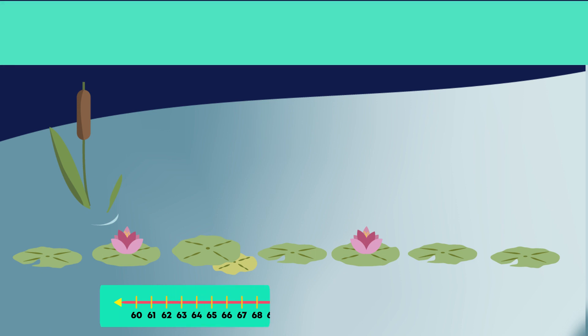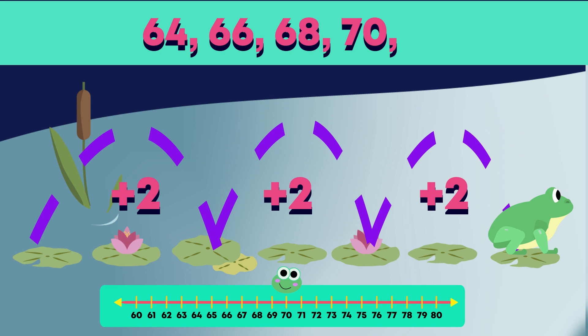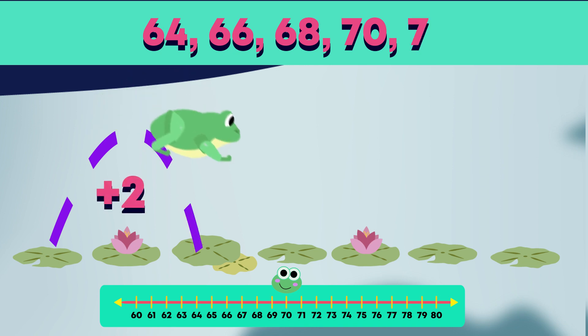Let's count on in 2s from 64. 66, 68, 70. We added 2 in the ones place each time because we were counting forwards in 2s. Where should the frog land next time if we keep counting on in 2s? 72 is right!